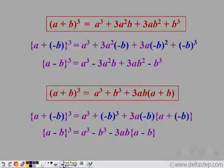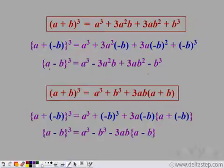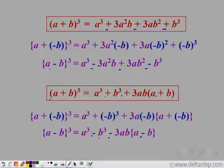So if we have a minus b whole cube, we can use either form. You can also verify by expanding a minus b whole cube directly. Notice that the terms in a plus b whole cube and a minus b whole cube are the same — a cube, 3a square b, 3ab square, and b cube — the only difference is the signs.